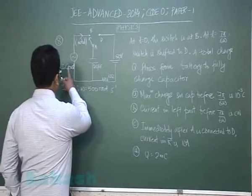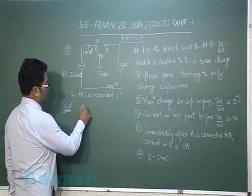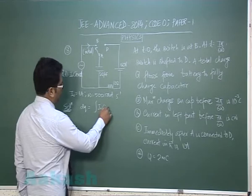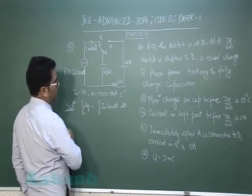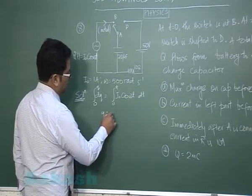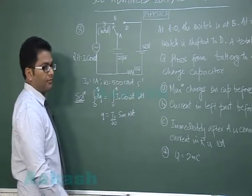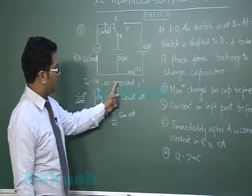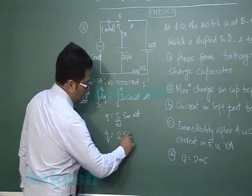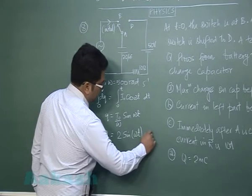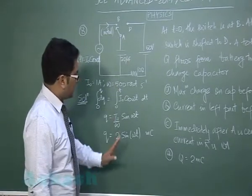To find the charge, dQ equals I-naught cos(omega t) dt. Integrating from t equals 0 where Q equals 0, we get Q equals (I-naught by omega) times sin(omega t). With I-naught equal to 1 ampere and omega equal to 500, this gives Q equals 2 sin(omega t) millicoulombs — the charge on the capacitor as a function of time.